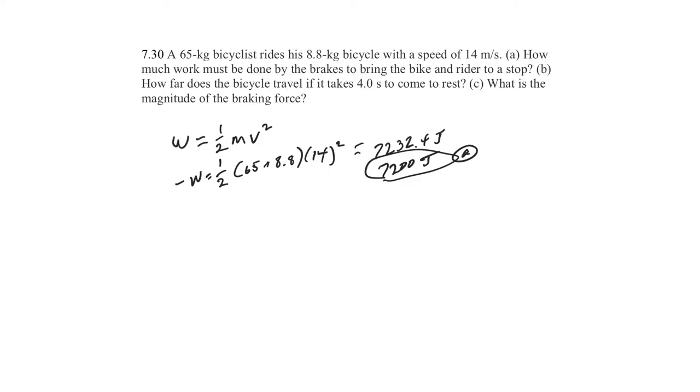Okay, now that work is being done opposite to the bike. So it's doing 7,200 joules of work negative to the bike. It's doing it in the other direction, trying to stop him. What's the next question? How far does the bicycle travel if it takes four seconds to come to rest?